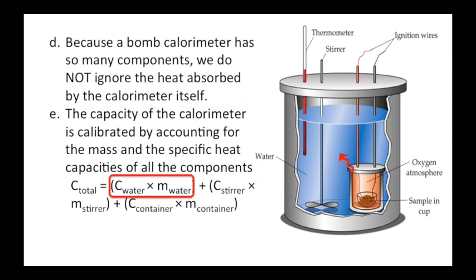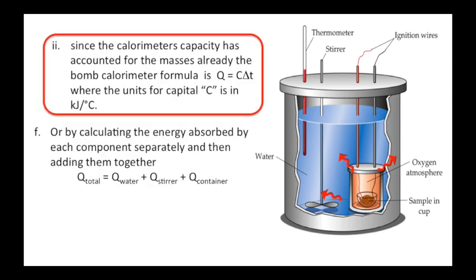We can calculate how much heat goes into the water, how much heat goes into the stirrer, into the container itself, even the thermometer. Now all of those calculations and measurements are done for us in a bomb calorimeter. We've already included the mass of the thermometer, the mass of the stirrer, the specific heat capacity of each thing.